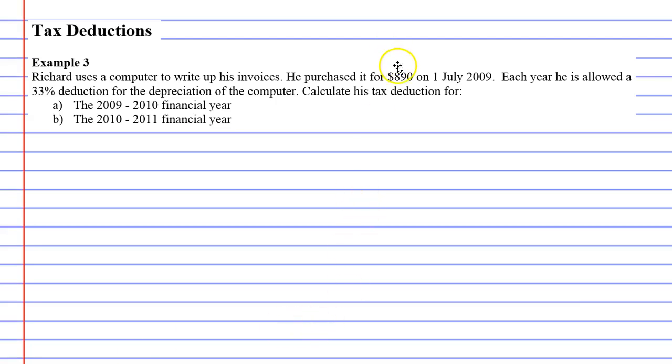Instead, it says that each year he is allowed a 33% deduction for the depreciation of the computer. So you can only claim 33% of what the computer is worth each year.